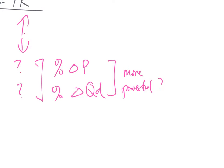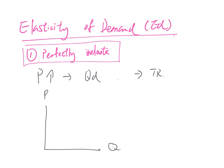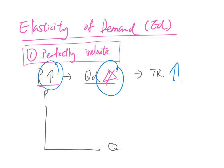That is the elasticity of demand. Let's look at the types of elasticity of demand, going from the least responsive consumer. When the price increases with perfectly inelastic demand, the consumer has no response — quantity is unchanged. So with price up and quantity unchanged, total revenue goes up. This is expressed in the diagram as a vertical demand curve.